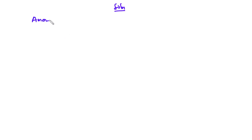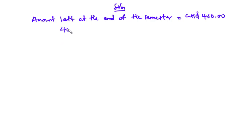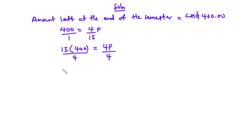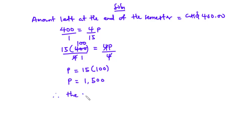The total amount left at the end of the semester was 400 Ghana cedis. Therefore 400 equals 4P over 15. Cross multiplying gives 15 times 400 equals 4P. Dividing both sides by 4: P equals 15 times 100. Therefore P is equal to 1,500 Ghana cedis.